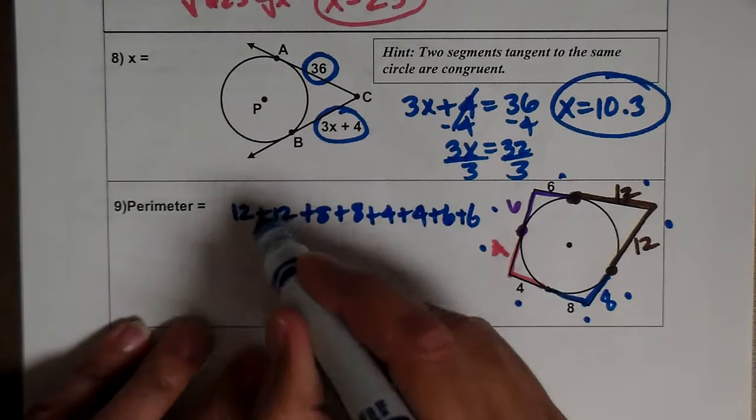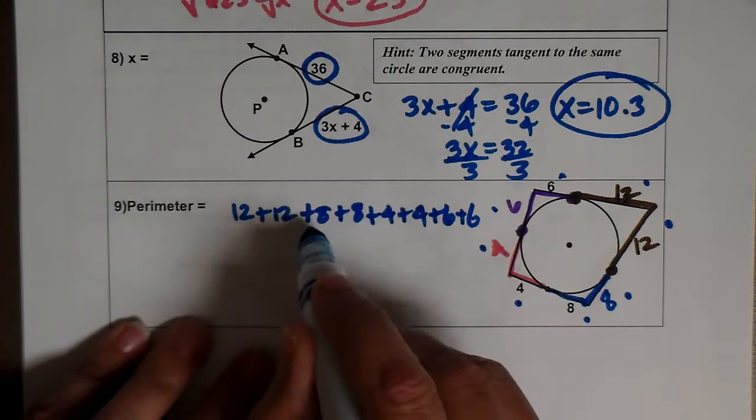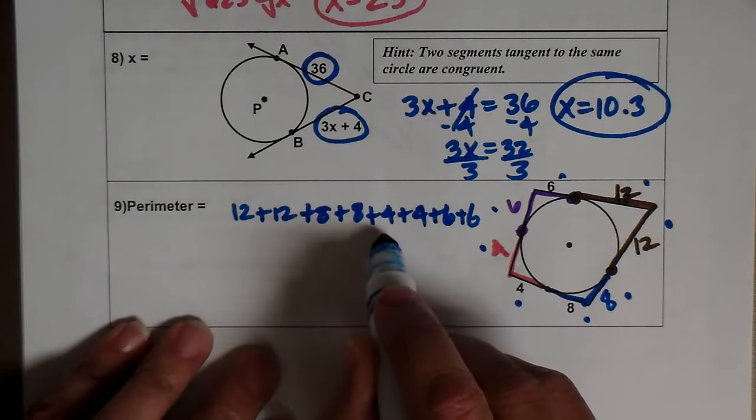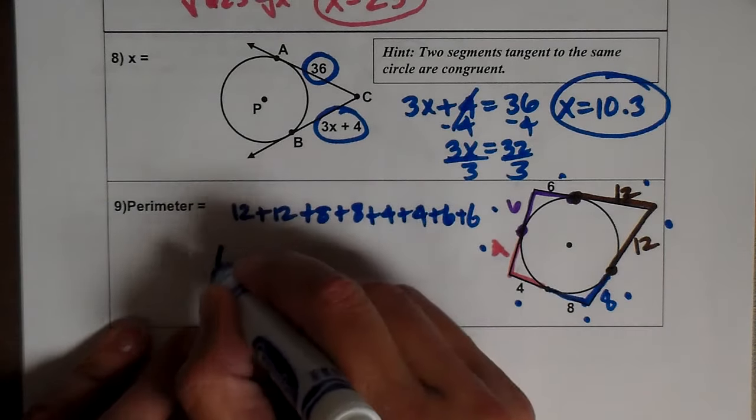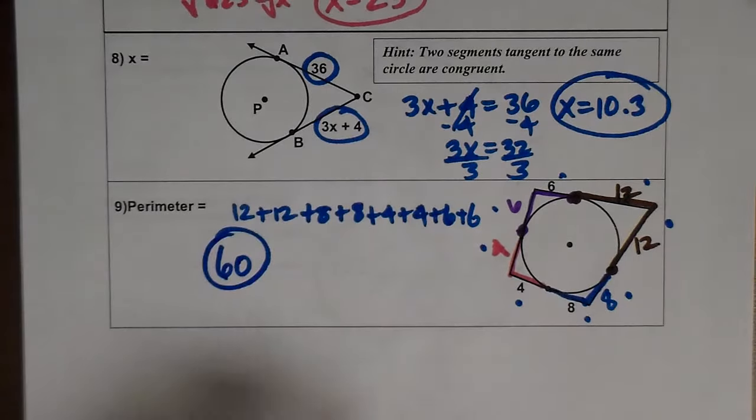So if I add all these together, I have 12 and 8 is 20, 12 and 8 is 20, that's 40, 48, and 12 is 60. So that's your perimeter. Again, that's using the properties of tangents.